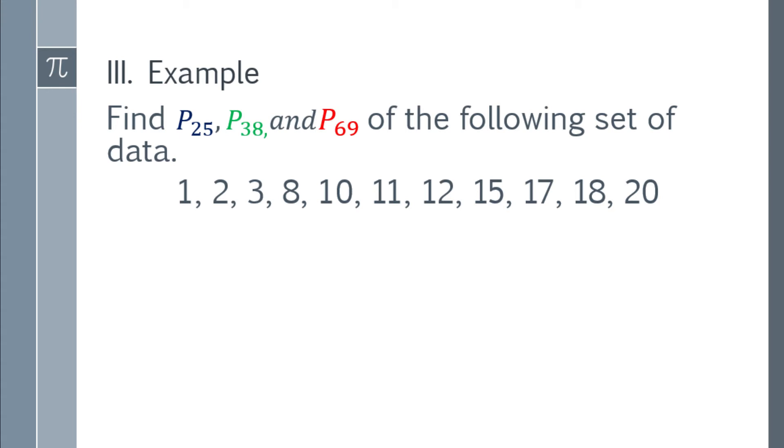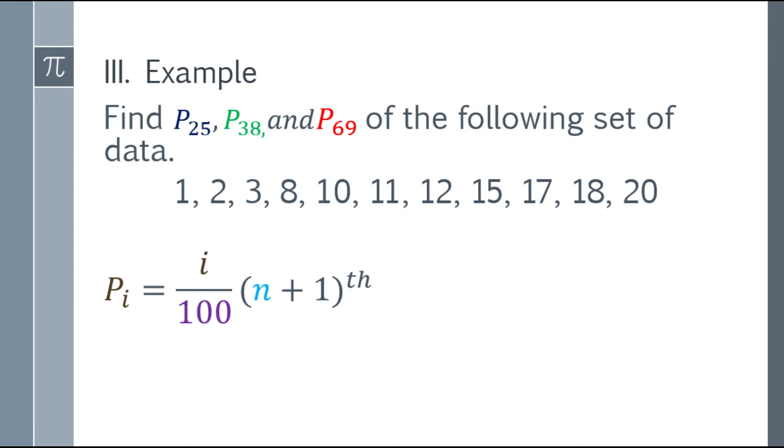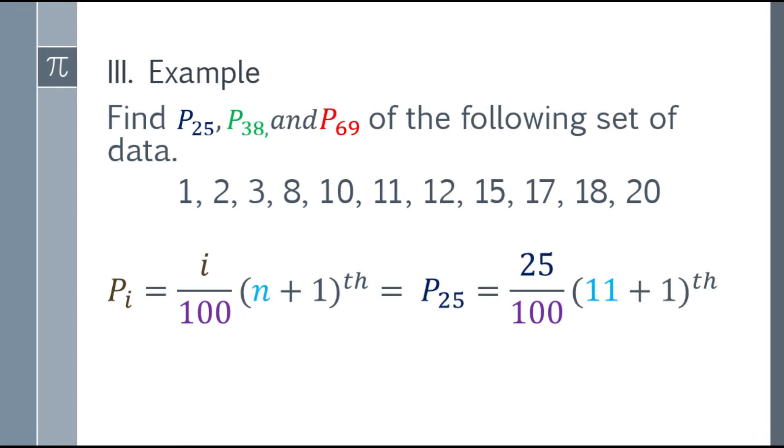Magiging 1, 2, 3, hanggang 20. Na-arrange ko na siya from lowest to highest. Next, lagay mo yung formula. Nilagay ko na yung formula, alam natin ang N ay 11. Let's go with the first one, P 25. Palito mo yung i ng 25, at yung N nilagay ko na, palito ko na siya, gawin ko na siyang 11.